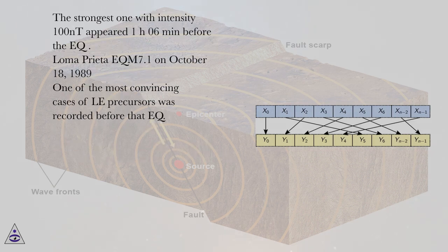The full-field proton magnetometer recorded several magnetic disturbances. The strongest one with intensity 100 nT appeared 1 hour 06 minutes before the EQ.